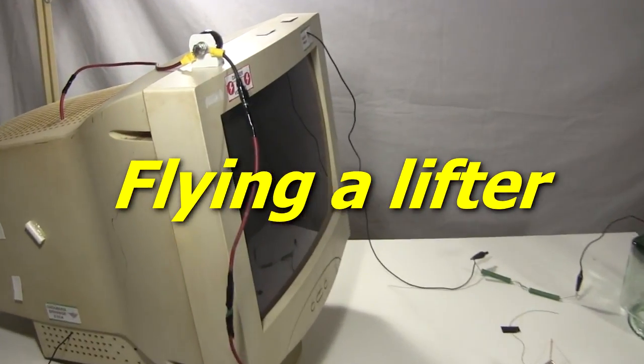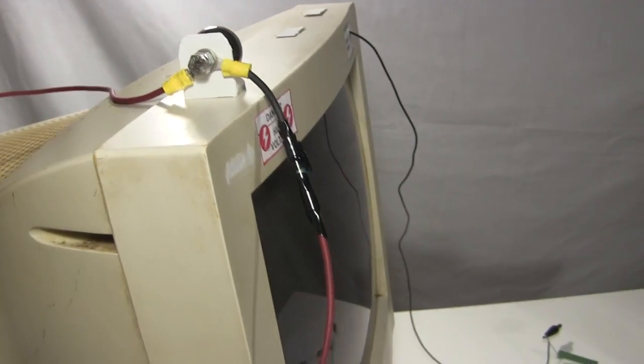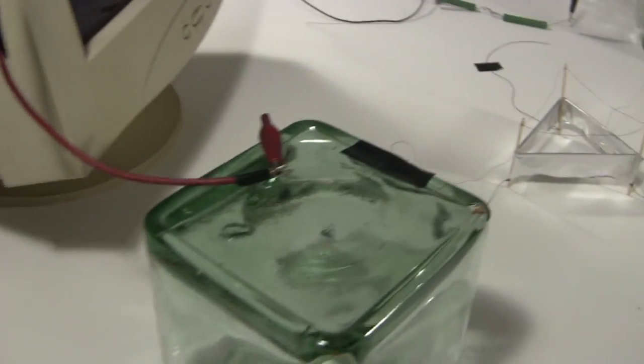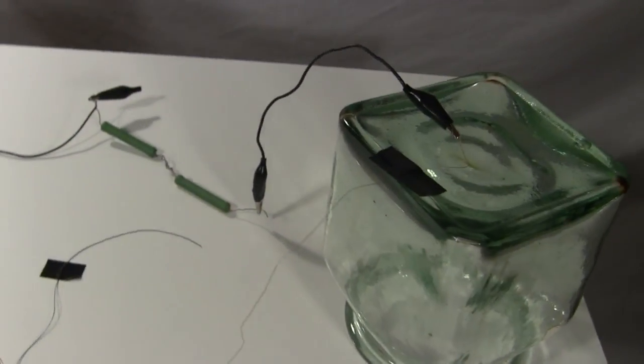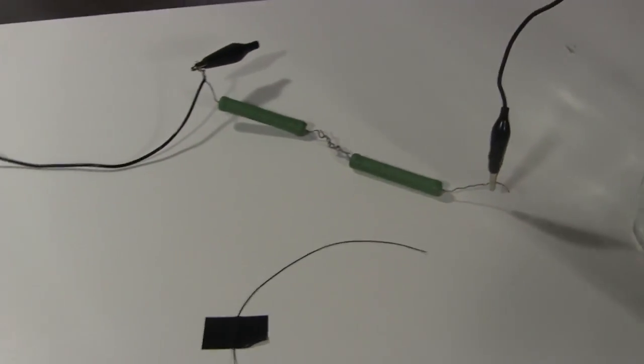Time for some fun with the lifter. Here's the setup. The high voltage positive output is connected to the thin wire at the top of the lifter. Meanwhile the foil, or skirt of the lifter, is connected to these two resistors.